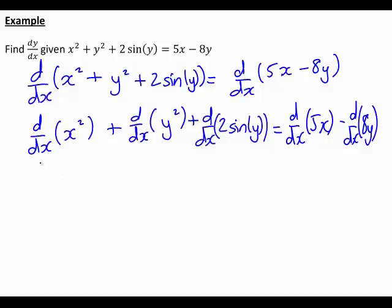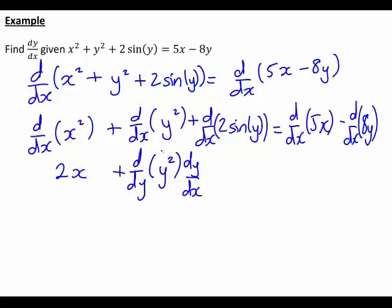The first term, the derivative with respect to x of x², is just the standard derivative: 2x. But with the next one, the derivative with respect to x of y², we need to take more care — that becomes the derivative with respect to y of y², times dy/dx, based on what we saw before. That is, whenever we have a function of y but we're differentiating with respect to x, we must first differentiate it with respect to y, then multiply by dy/dx. Similarly, the next term, 2sin(y), is also a function of y, so it will be the derivative with respect to y of 2sin(y), times dy/dx.